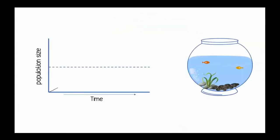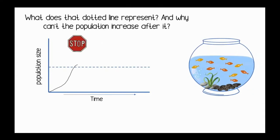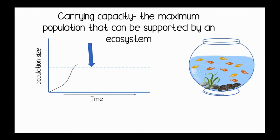Let's look at the growth of the fish population once again on this graph here. What does that dotted line represent, and why can't the population increase after it? The dotted line represents the carrying capacity of the fishbowl ecosystem.